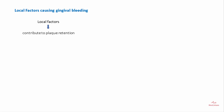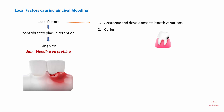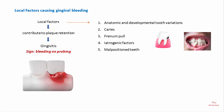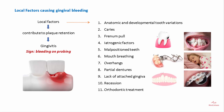There are local and systemic factors associated with gingival bleeding. Local factors are responsible for plaque retention and can lead to gingivitis, where bleeding on probing is a classical sign. These local factors could be anatomical and developmental tooth variations, caries, frenal pull, iatrogenic factors, malpositioned teeth, mouth breathing, overhangs, partial dentures, lack of attached gingiva, recession, and orthodontic treatment.